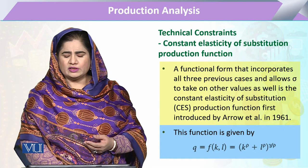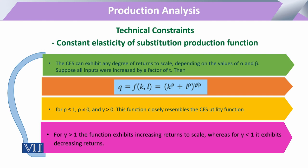The degree of returns to scale in the Cobb-Douglas production function comes in three forms: constant returns to scale, increasing returns to scale, and decreasing returns to scale. Depending upon the values of the elasticities of inputs — alpha and beta — if all inputs are multiplied by a factor t, the total output will reflect the returns to scale, either equal to, greater than, or less than t.